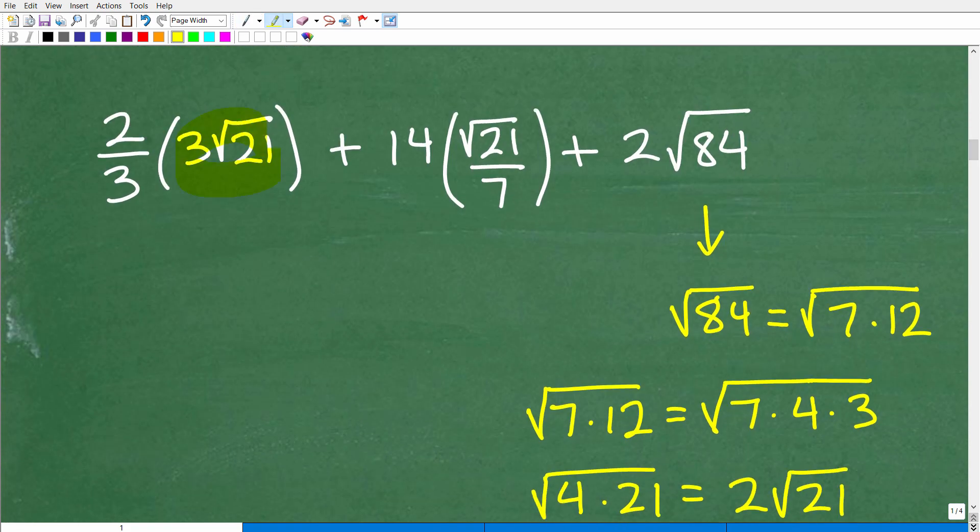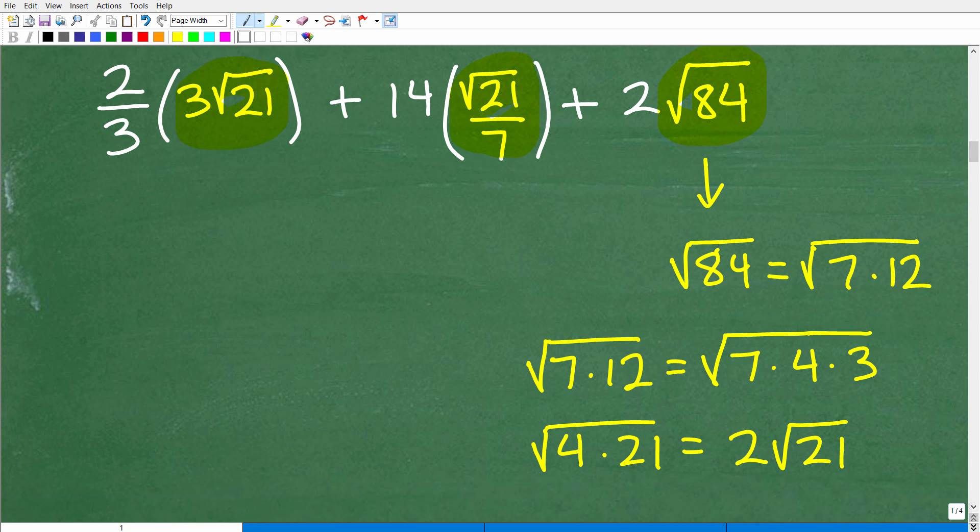So we already fixed up that first square root, and now we fixed up that second one. So now let's go ahead and focus on that third square root. And then we'll, again, pull this all together and clean this all up at the end. All right, so the square root of 84, again, we want to simplify these. So I'm just going to think about different factors.